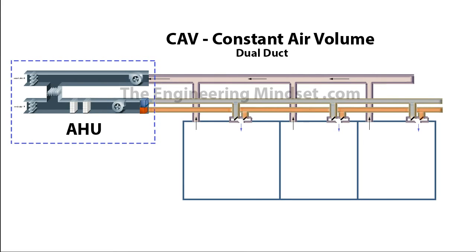Another option you might see in industry is the dual duct CAV system, which is becoming more and more uncommon — you'll still find it in some older buildings. Basically you've got two ducts supplying the room: one provides cold air and the other supplies warm air. This air is then mixed in dampers in a box to suit the temperature inside, and the return air is returned back in a normal duct to be recycled or dispersed to atmosphere. This system gives much improved thermal control but there is little control of humidity. It's also not particularly energy efficient, as you're supplying air through two streams with all that resistance for the fan to overcome, and you're unnecessarily heating and cooling air that may be mixed and then have the load change.